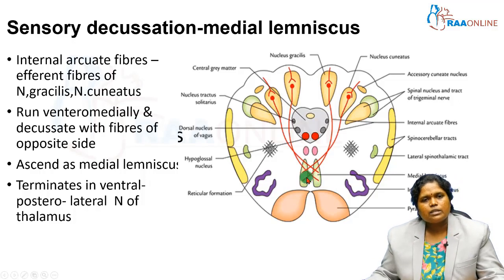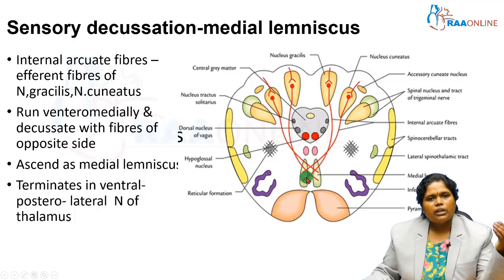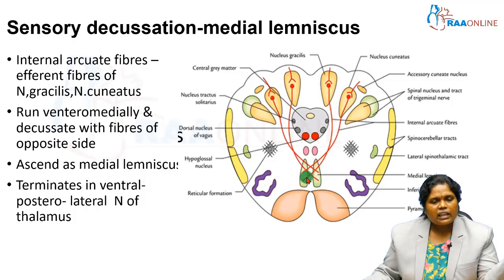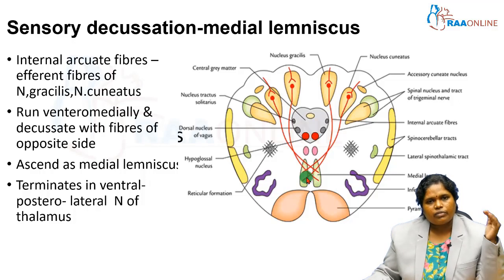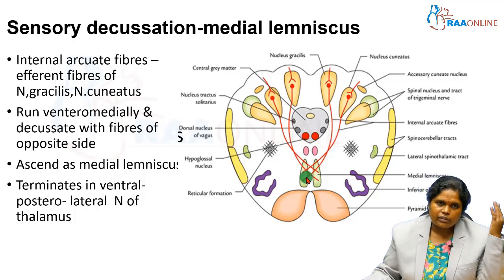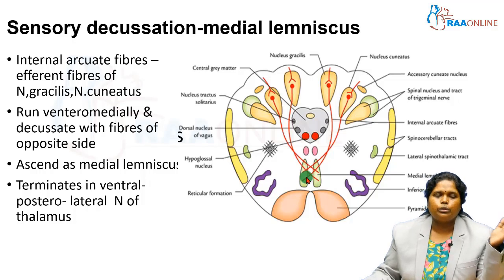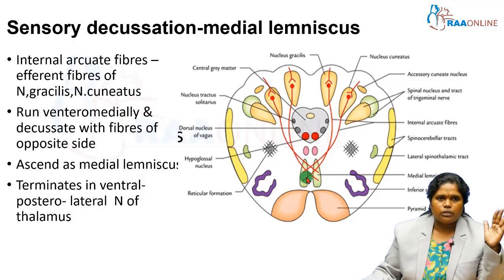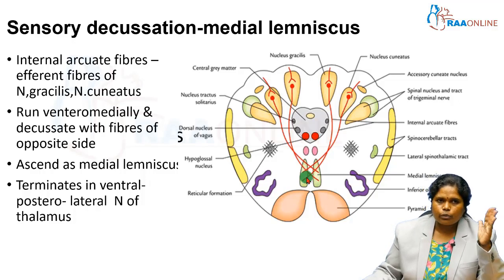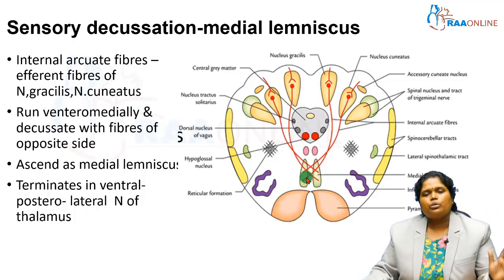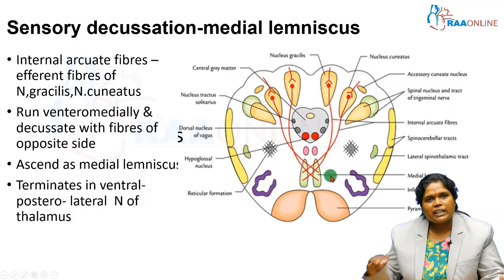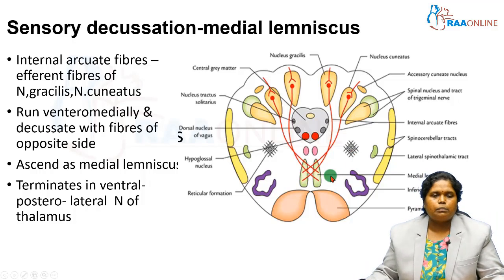The medial lemniscus relays in the VPL nucleus of the thalamus, and from the thalamus it goes to the primary sensory cortex, area number 3,1,2. This is the complete tracing of the medial lemniscus.